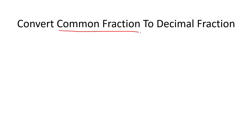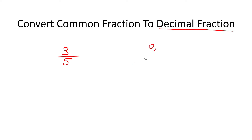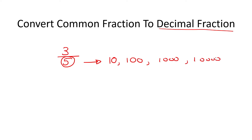Hey guys, so in this lesson we're going to learn how to convert a common fraction, which is something like 3 over 5, to a decimal fraction, which is something that has a decimal in it. All you do — it's so easy — is take the number at the bottom and change it to either a 10, or a 100, or a 1000, or even 10,000 — any number with zeros.